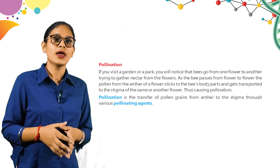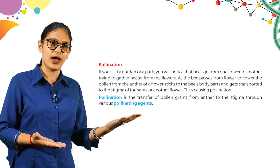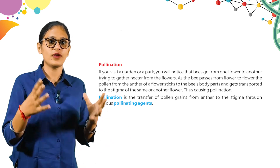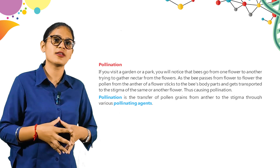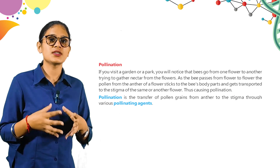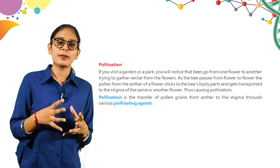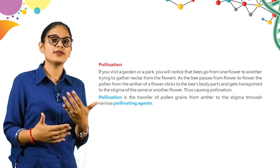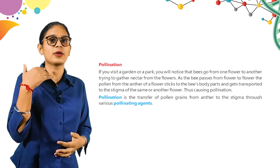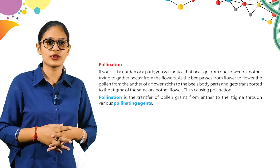Now here is pollination. If you visit a garden or a park, you will notice that bees go from one flower to another trying to gather nectar. As the bee passes from flower to flower, pollen from the anther of a flower sticks to the bee's body and gets transported to the stigma of the same or another flower, thus causing pollination. Pollination is the transfer of pollen grains from the anther to the stigma through various pollinating agents — either insects or wind.